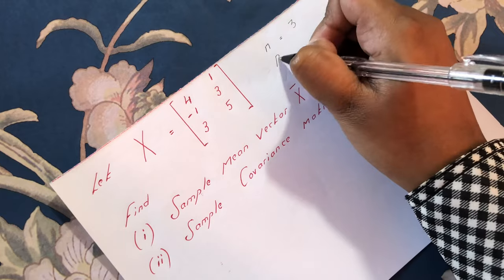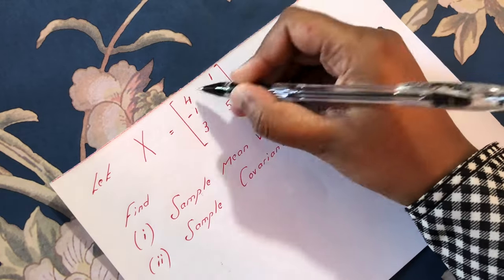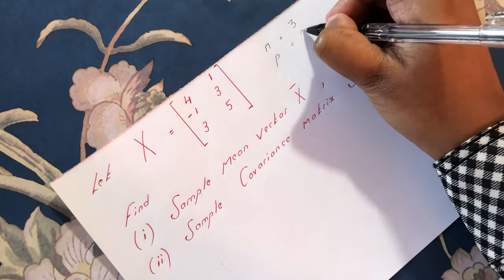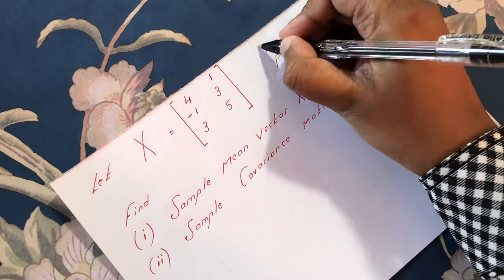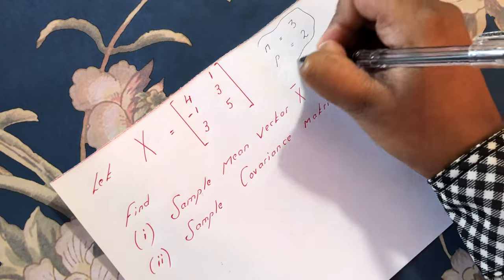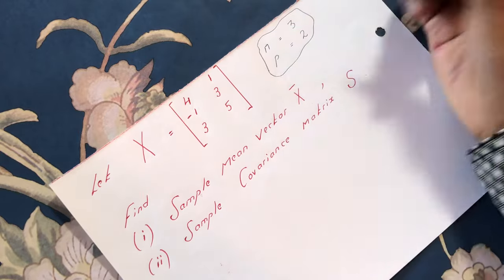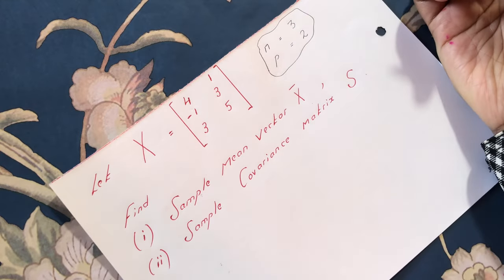And p, which is the number of columns and the number of variables, is 2. So we have n equals 3 and p equals 2.